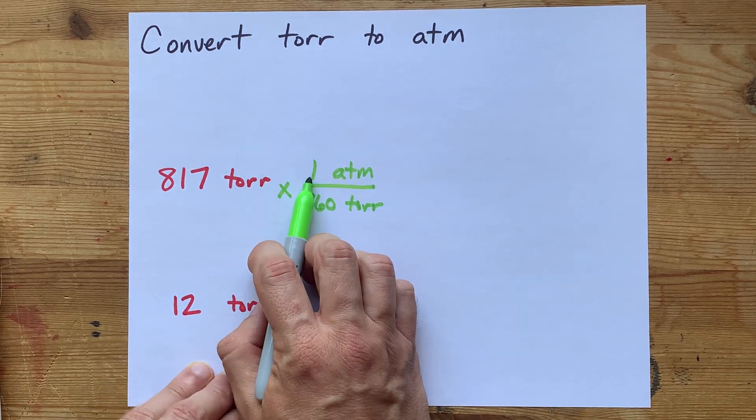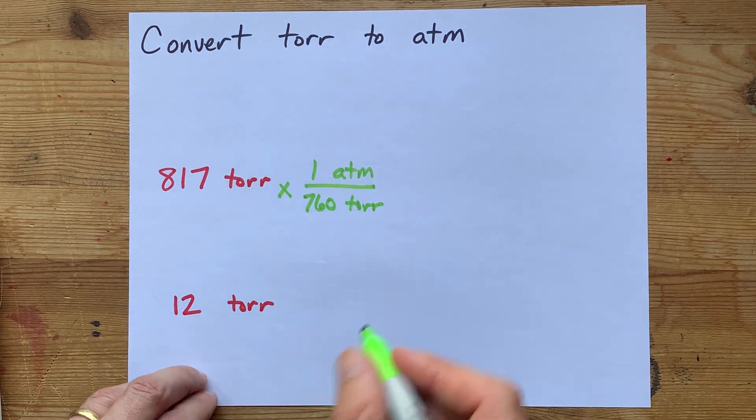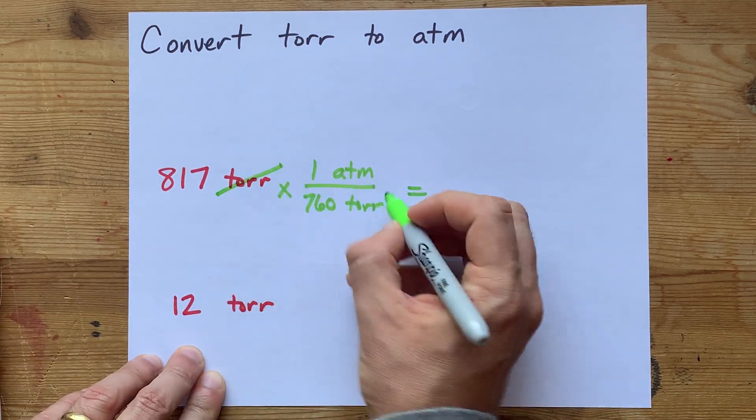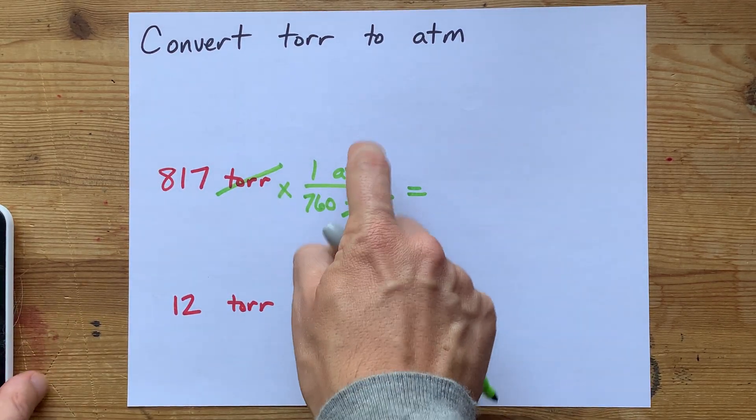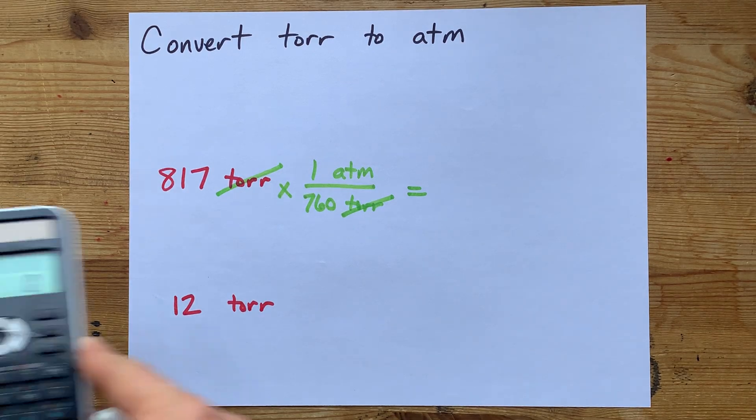817 times 1 divided by 760 is what's going to give you your answer. The units of torr cancel each other out and you're left with atmospheres as your unit.